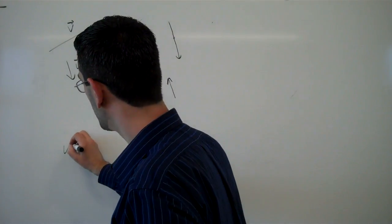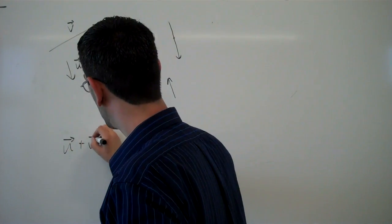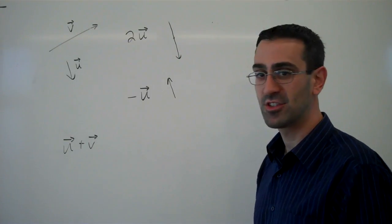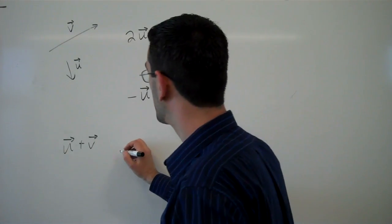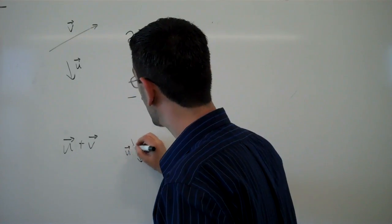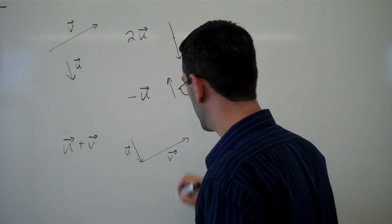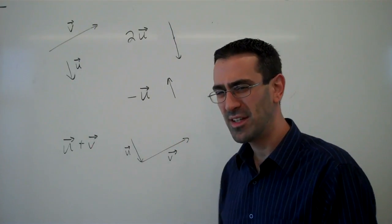Now we can also combine vectors. If I want to take u plus v, I can do that geometrically by putting the vectors head to tail. So here's the vector u, and then I add to that. From the end of that, I move by vector v.